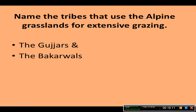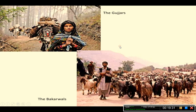Tribes that use alpine grasslands for extensive grazing are the Gujars and Bakarwals. Here is a picture of these communities — the Gujars and the Bakarwals — who are mainly dependent on sheep herding in these mountain grasslands.